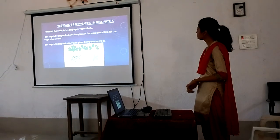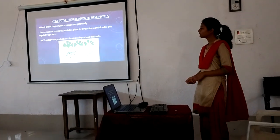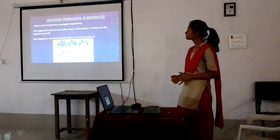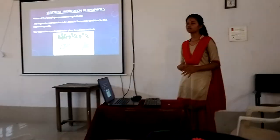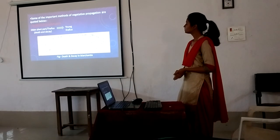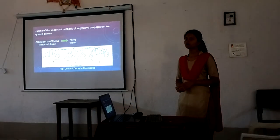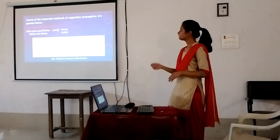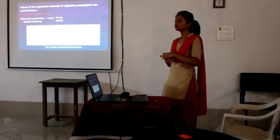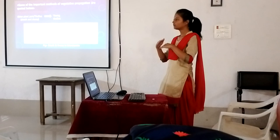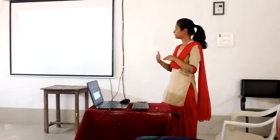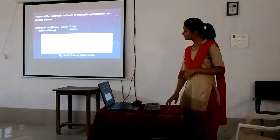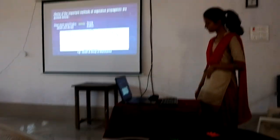Vegetative propagation in Bryophytes: most Bryophytes propagate vegetatively. Vegetative reproduction takes place under favorable conditions through decay of the plant. When the progressive death and decay reach the point of dichotomy of the plant, two branches are formed. These two branches may each develop into a new plant. We can see this from the photograph as well.